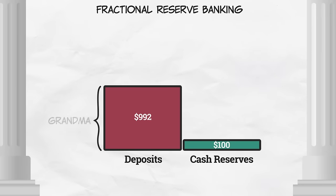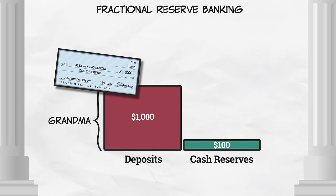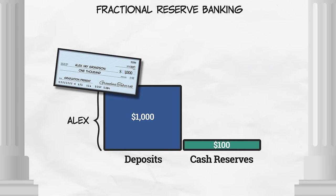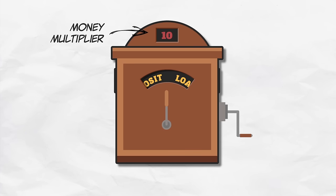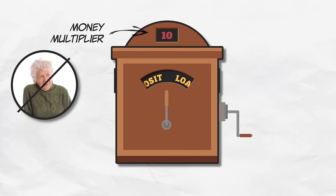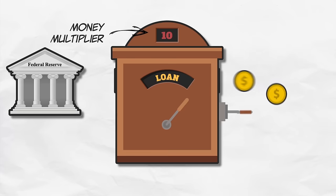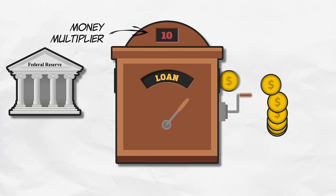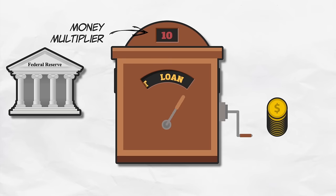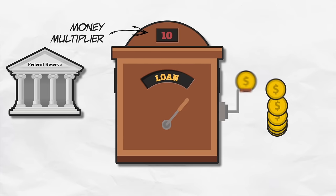Now let's clarify our previous example, and why it was key that Grandma was pulling cash from under her mattress. If Grandma had instead given you a check for $1,000, she'd simply be transferring money from her account to yours, which would not be creating new reserves. And so we wouldn't see this multiplier effect. The key player here isn't Grandma — it's Uncle Sam. The Federal Reserve can, with the click of a computer button, create new money, which it can use to buy financial assets, thus injecting new reserves into the banking system.